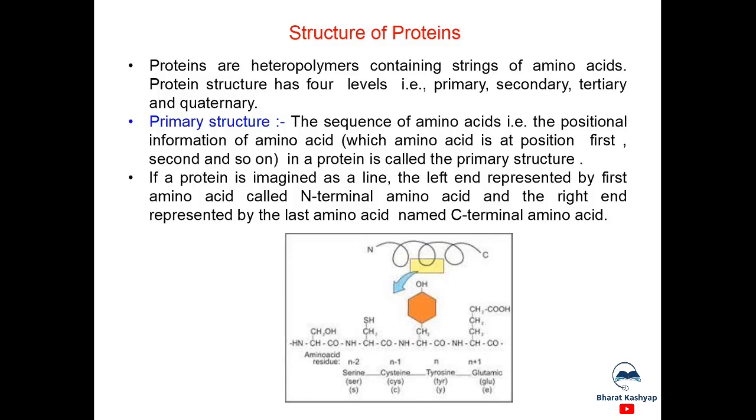This can be understood with this diagram here. This is the N-terminal amino acid and toward this side is the C-terminal amino acid. So, these are different amino acids which are joined by peptide linkage to form a protein.